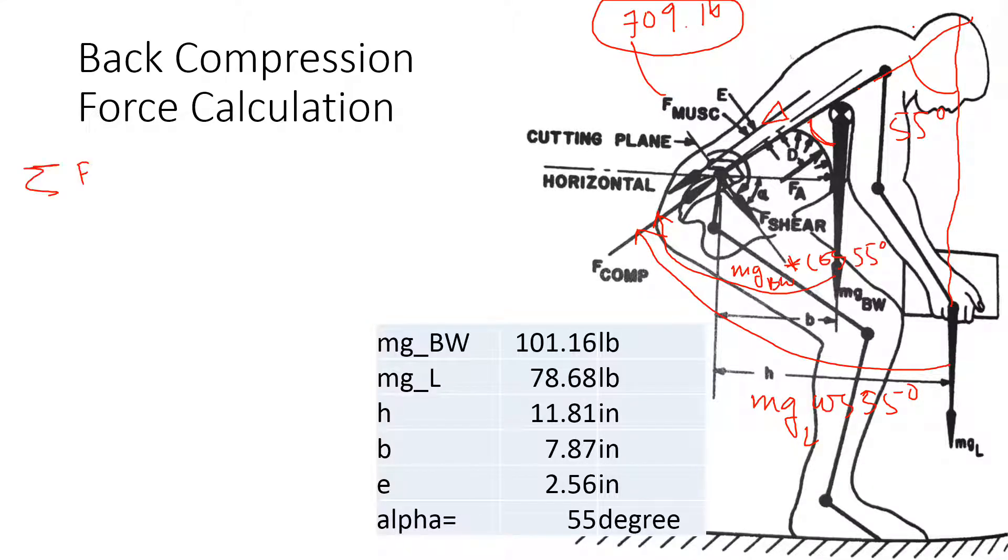That's 55 degrees. Now if I do summation of all forces in this direction, let's say downward to the spine this way as a positive direction, so summation of all forces equals zero.